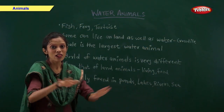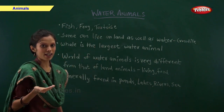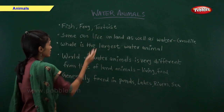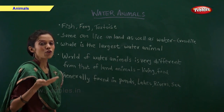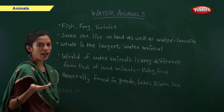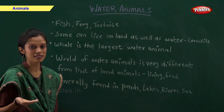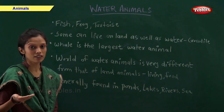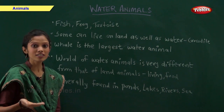Some animals live in water. They are called water animals. Some examples of water animals are fish, frog and tortoise. Some animals can live on land as well as in the water — crocodile is an example. Whale is the largest water animal. Water animals are generally found in ponds, lakes, rivers and sea.